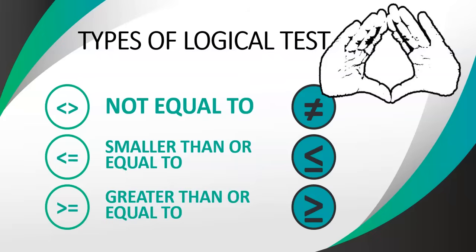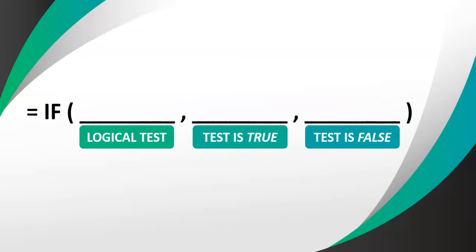Now, how do we use this in an IF statement? A logical test needs to be something you can say yes or no to. If you just write greater than or equal to 50, that's not a question you can answer — there needs to be something on both sides. You need to compare two things, like: cell B5 is greater than or equal to 50. If I know the value in B5, I can then say yes or no to that logical test. It's just one cell, not a range.